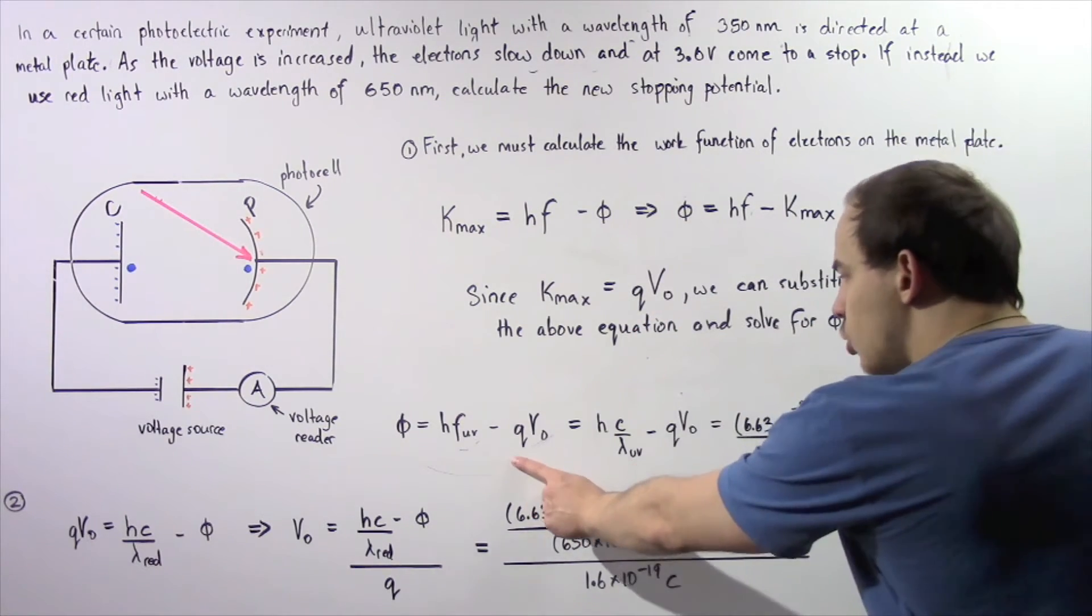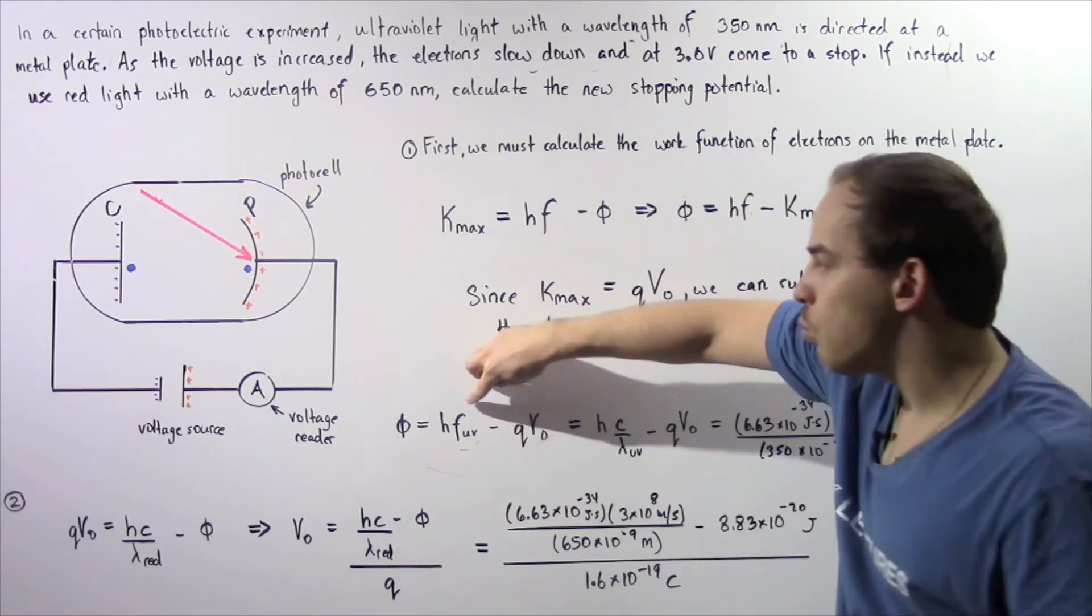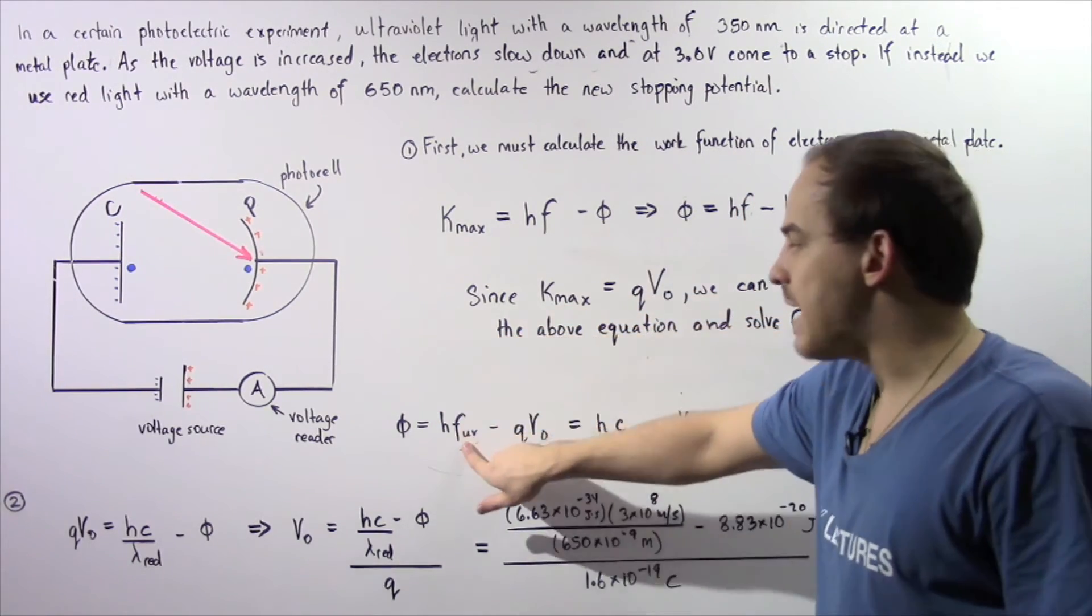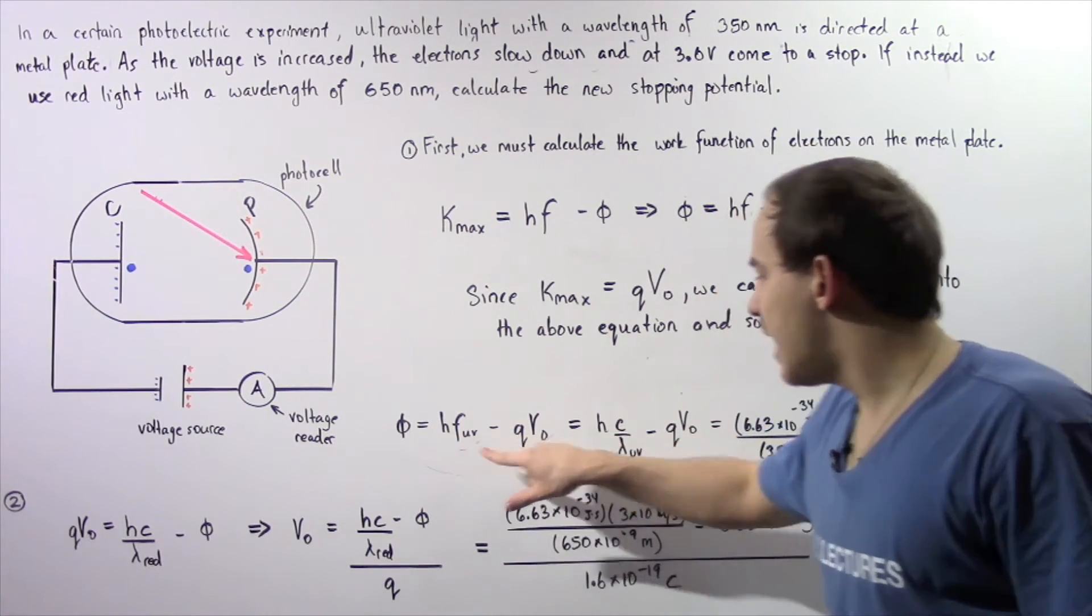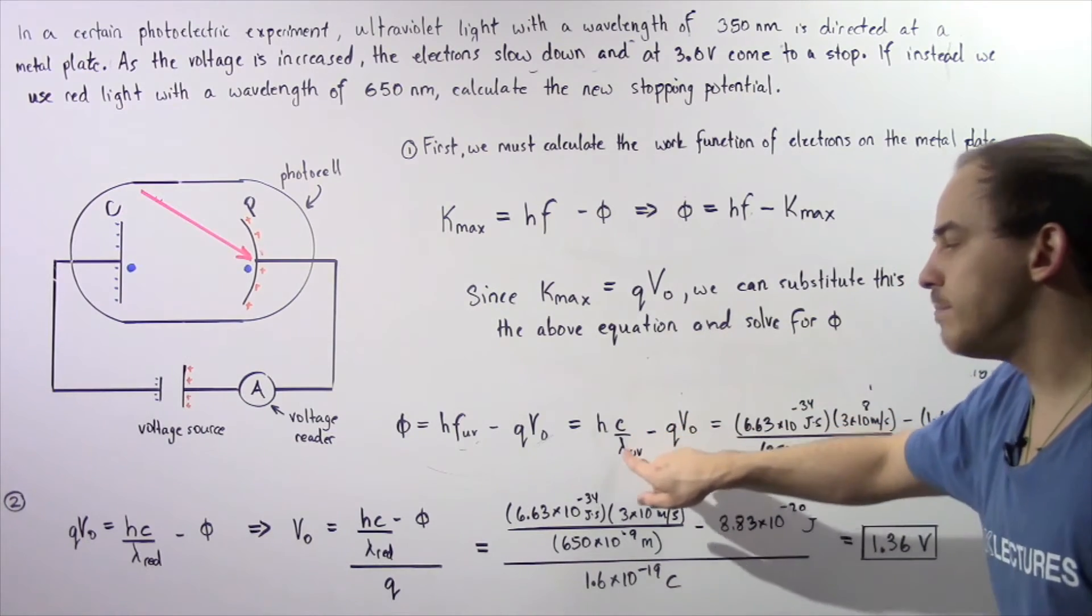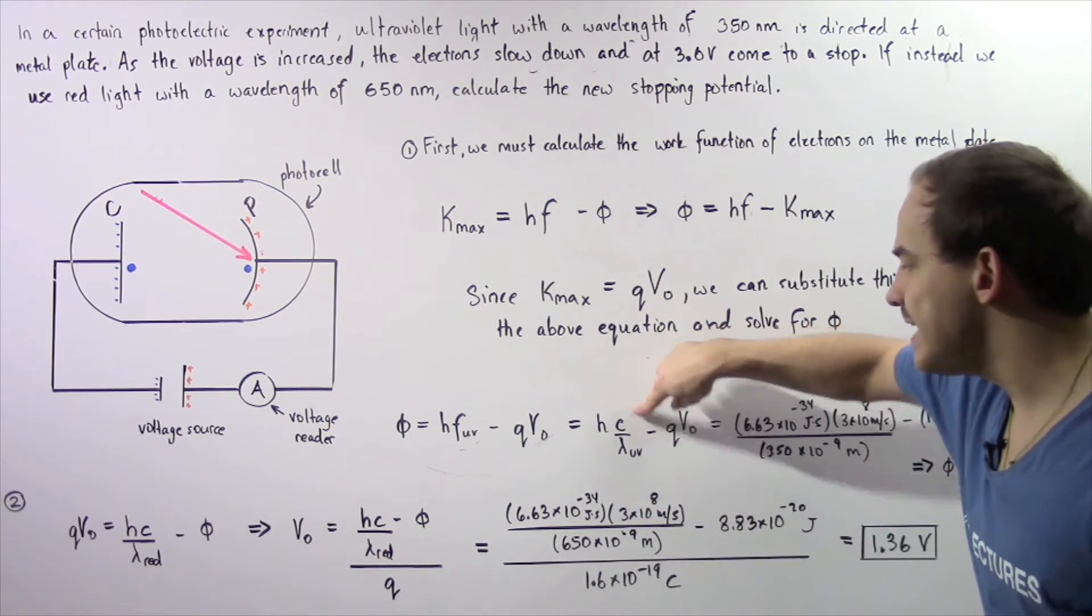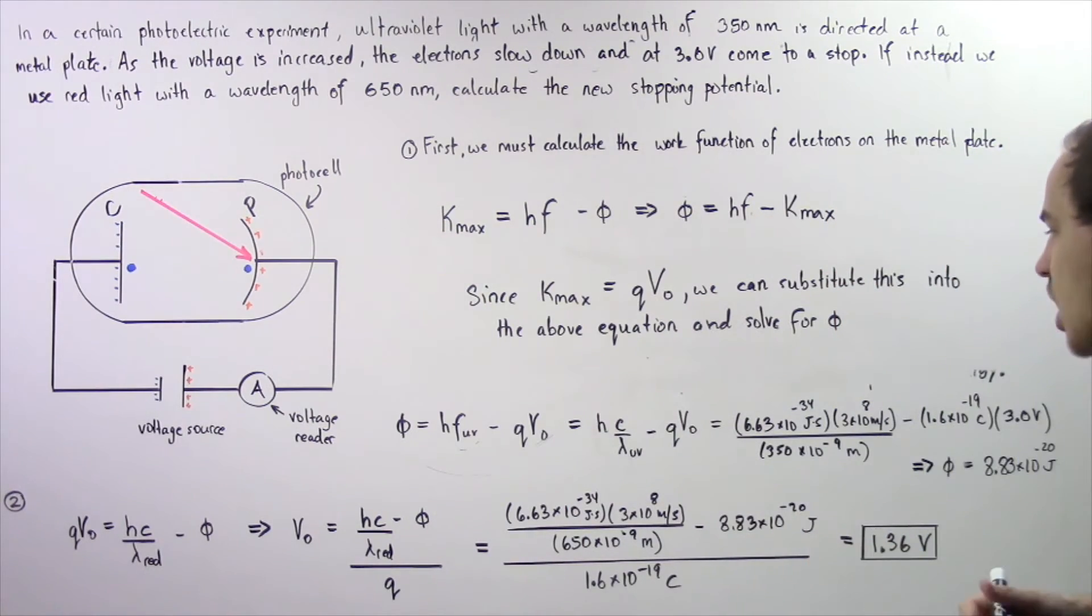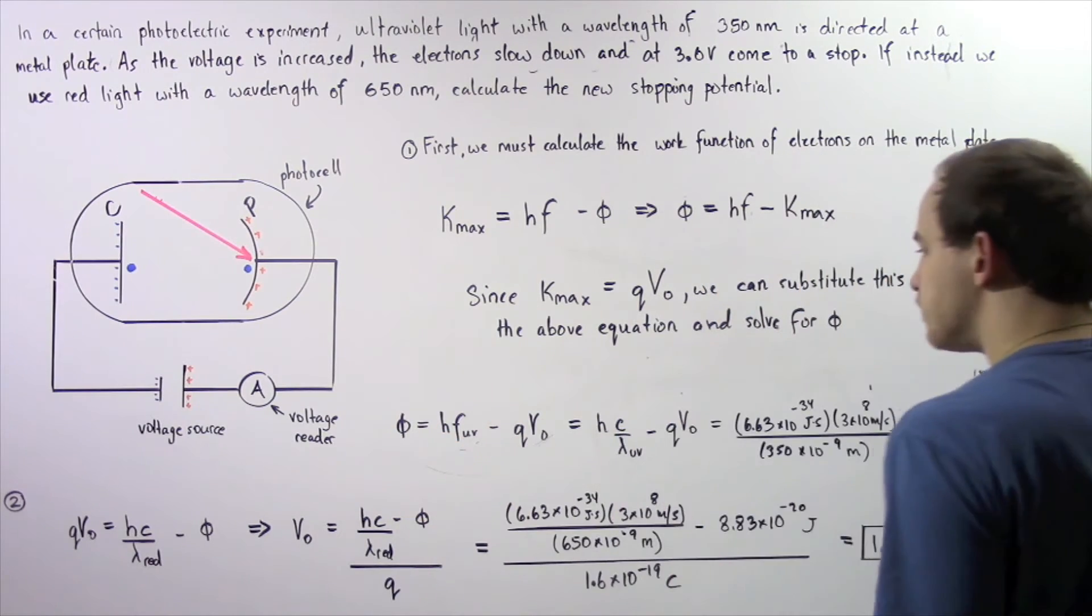So we know what Q is, we know what V naught is, we know what H is, but what is the frequency of our UV light? The frequency of UV light is equal to C divided by lambda, the wavelength of UV light, where C is the speed of light in a vacuum. So now we are ready to solve for the work function.